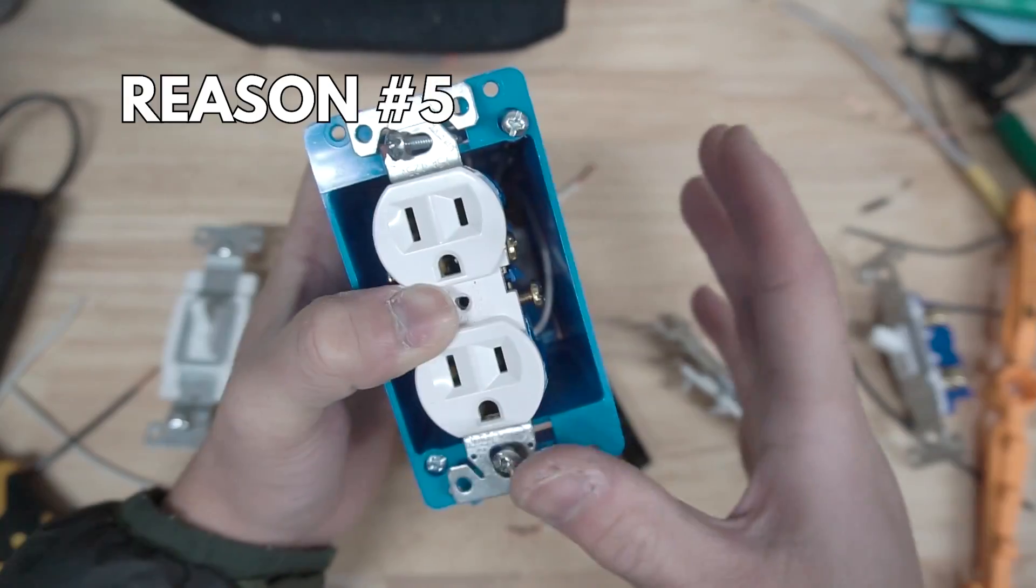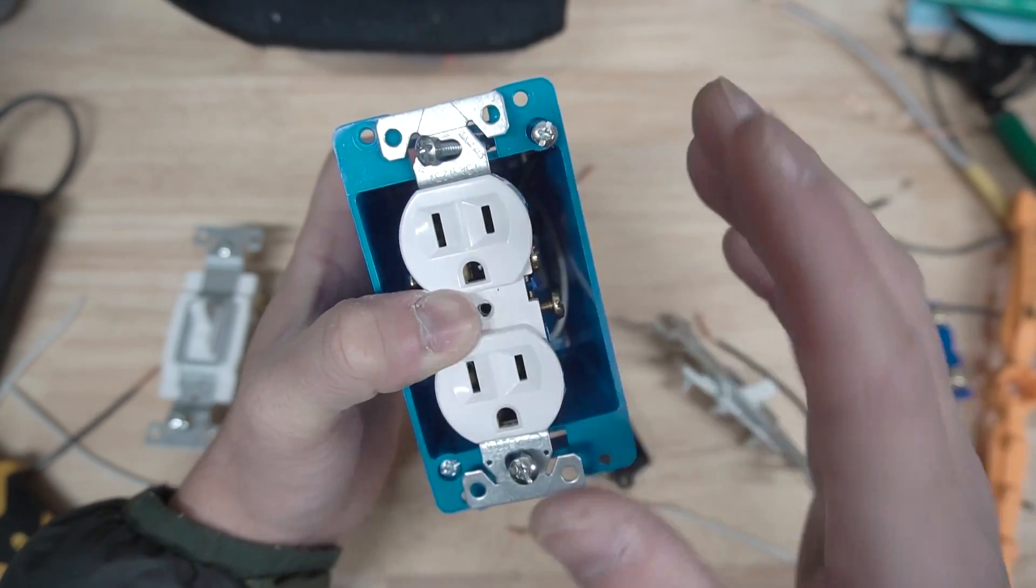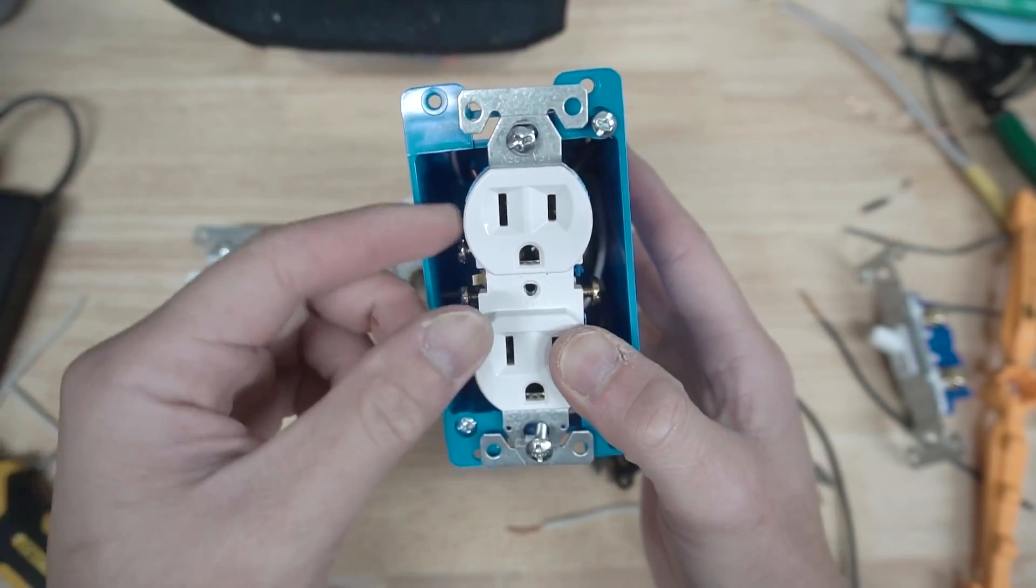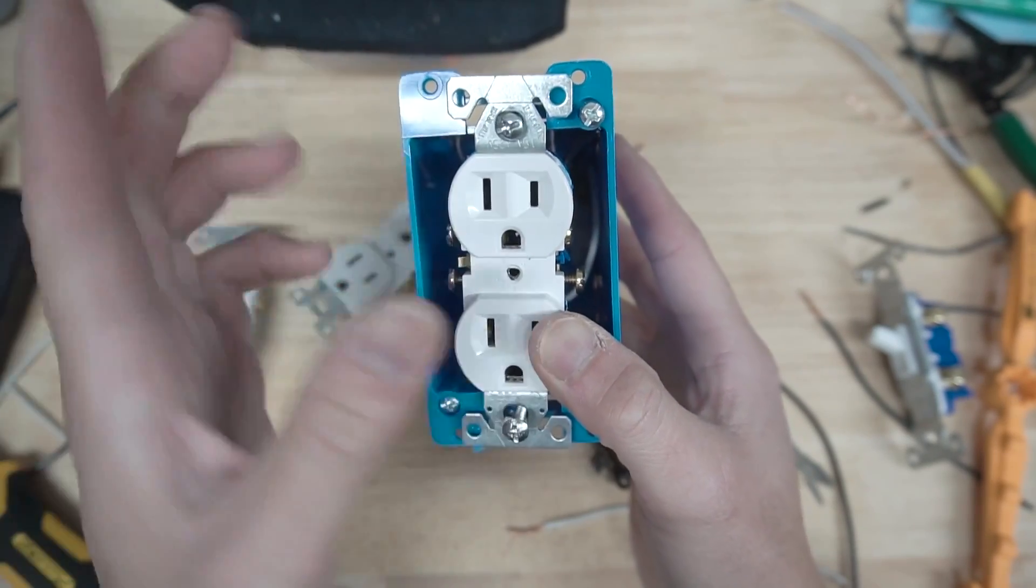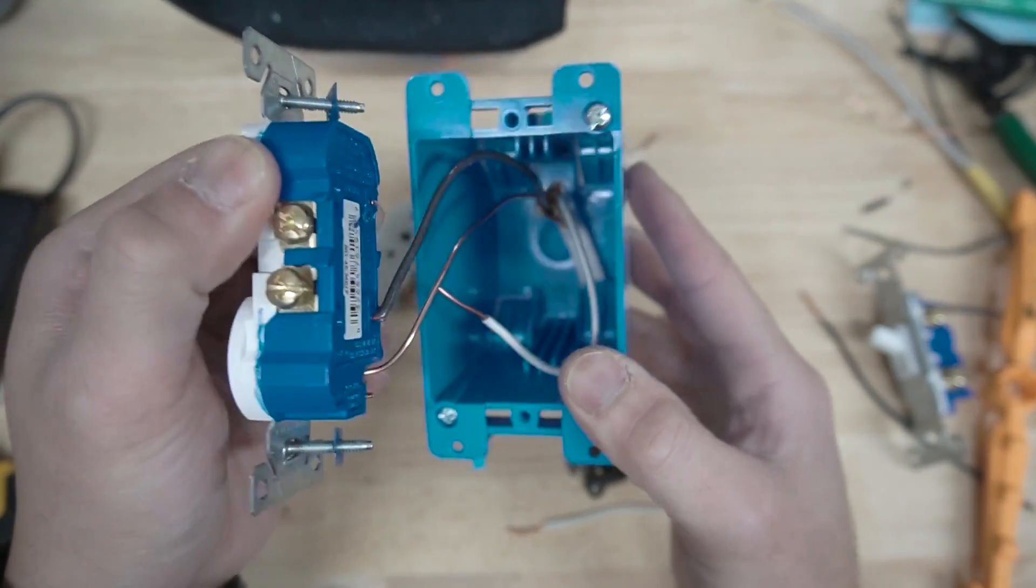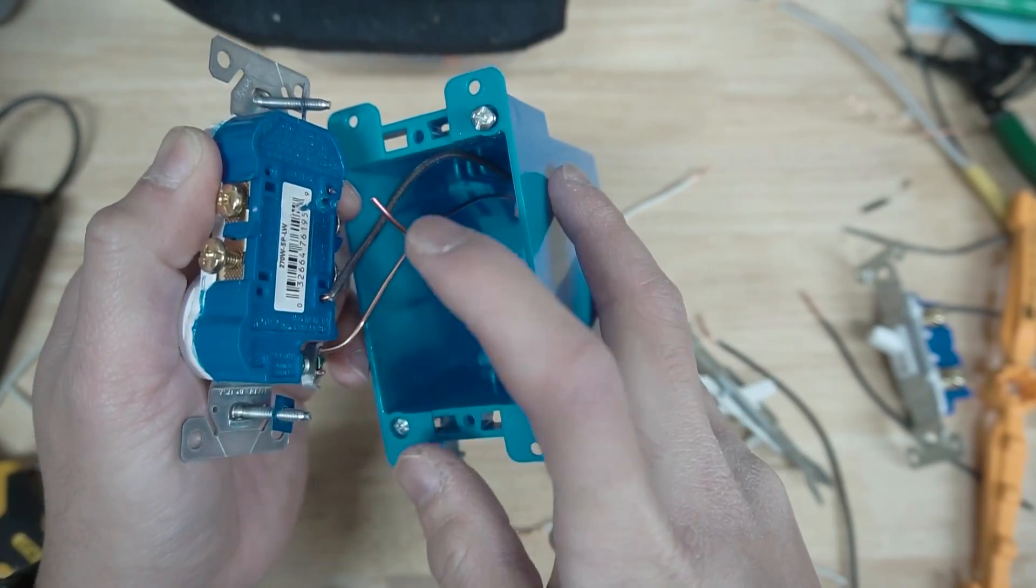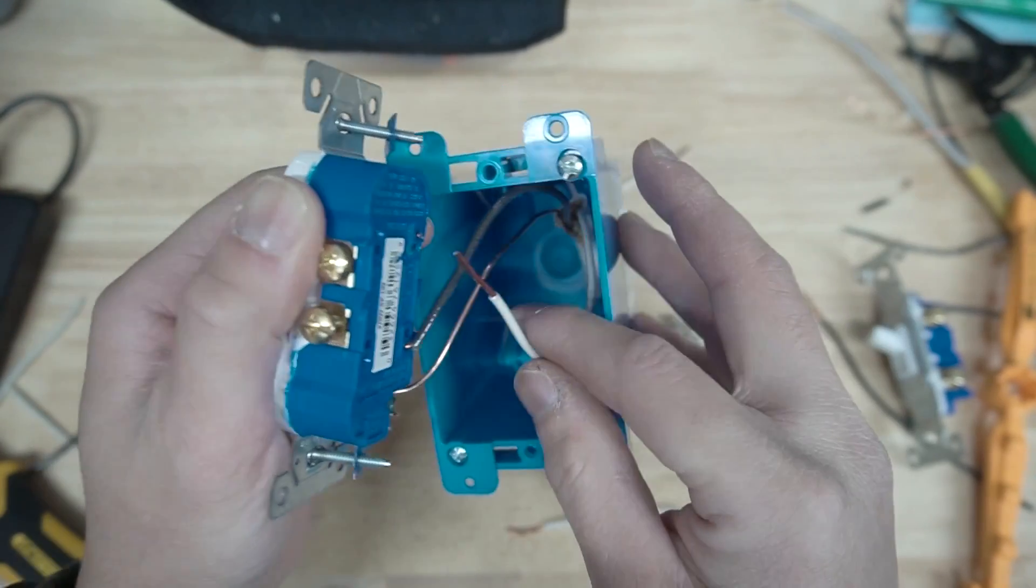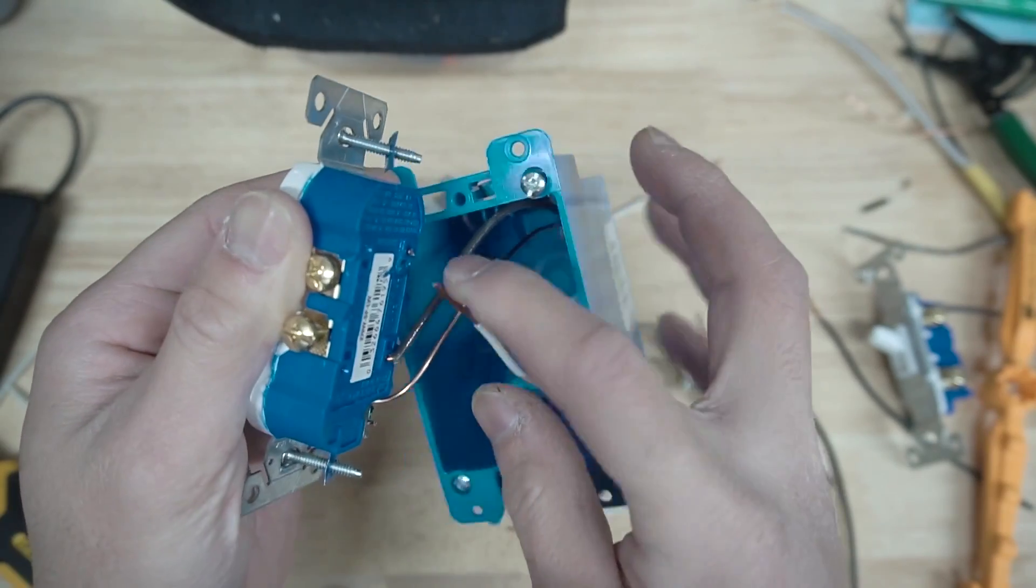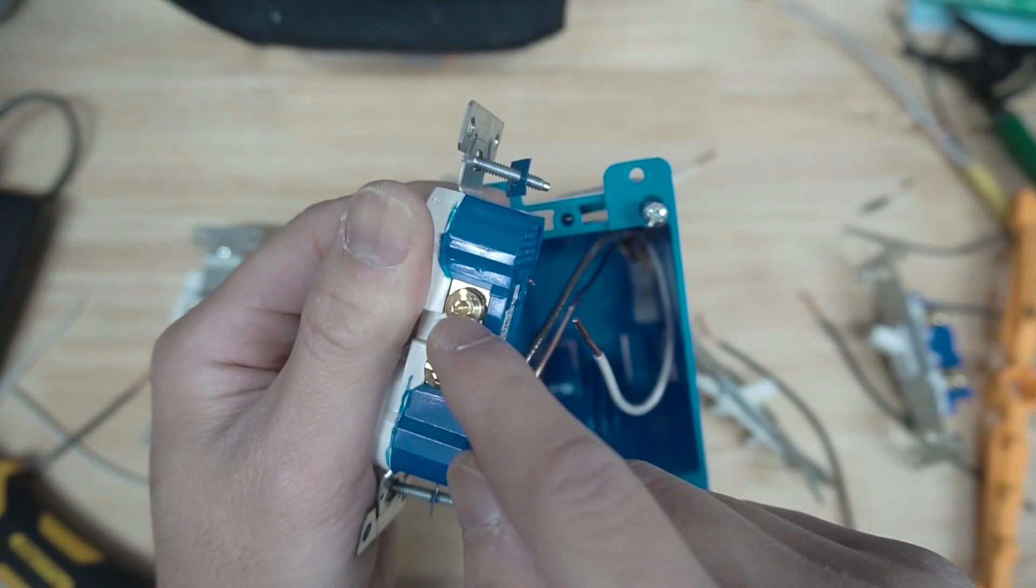Reason number five, the final one why I don't recommend speed wiring: here's an example I come across many times. When I open up a junction box and take out the outlet or especially the switches, and I try to pull it out, you have a wire that is just sticking out there, whether it be neutral or hot. I've come across it, and it is really dangerous. That's because the speed wire method has failed.